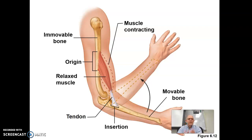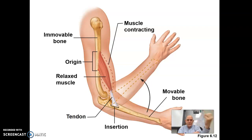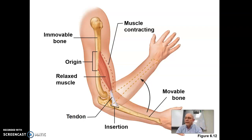Synergists help. Synergy means we work together. Synergists help the prime mover do the same movement, and they may also pull on it and assist it. They may also keep other things from moving — for example, your shoulder up here, you don't want it moving around when you're just bringing your hand up. If you're doing curls you want to just bring this up and hold everything else still. So a synergist can help hold things still so you can do the movement, or keep your wrist still.